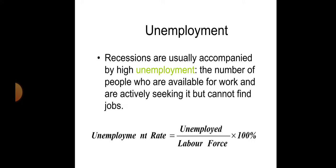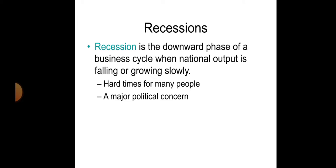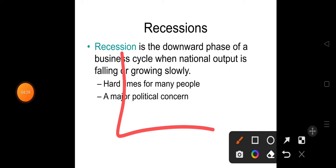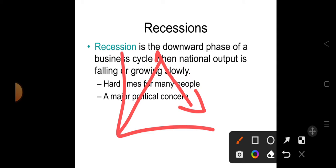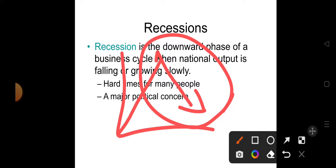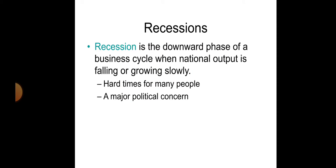Unemployment — recessions are usually accompanied by high unemployment. If you are having a recession, here in the graph you can see good economic growth before a decline. This is the downward phase of the business cycle where national output is falling or growing very slowly.